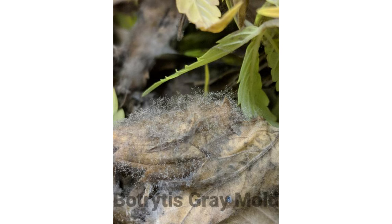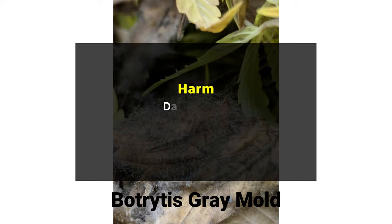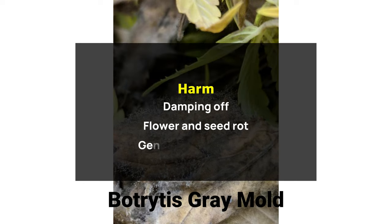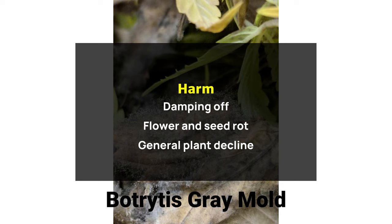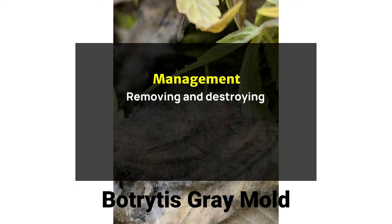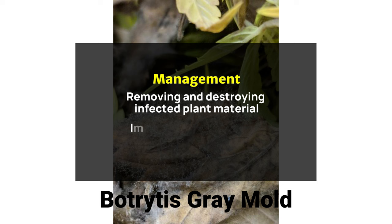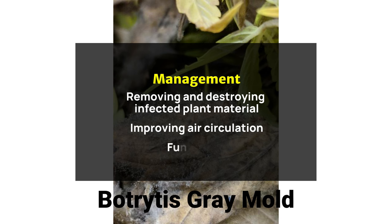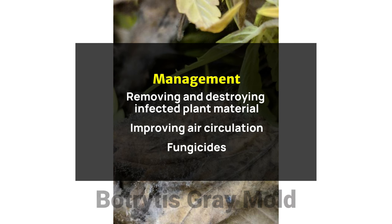Botrytis Gray Mold harm: gray mold can lead to damping off, flower and seed rot, and general plant decline. Management: these can be managed by removing and destroying infected plant material, improving air circulation, and using fungicides.